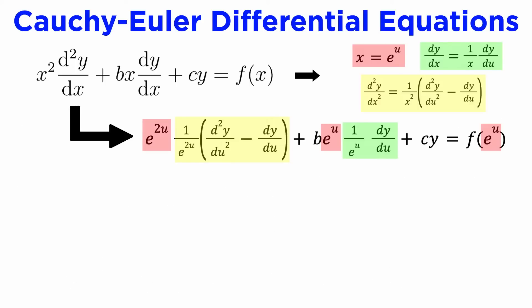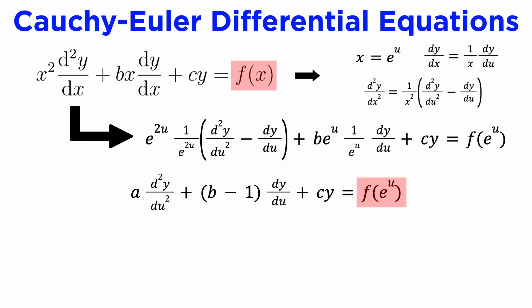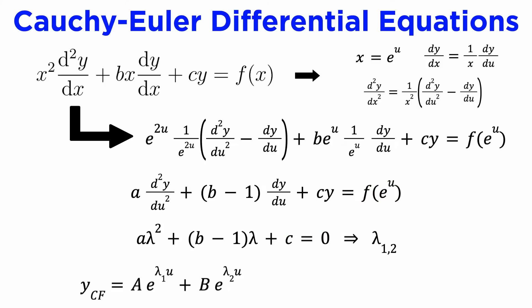We then substitute these into our differential equation. What will happen is that we end up with a linear second-order differential equation with constant coefficients, which we already know how to solve from the previous tutorial. The right side of the DE will go from f of x to f of e to the u, so our particular integral will usually contain exponential functions. Once we've got our general solution for y in terms of u, replacing u with natural log of x will lead to our final answer.